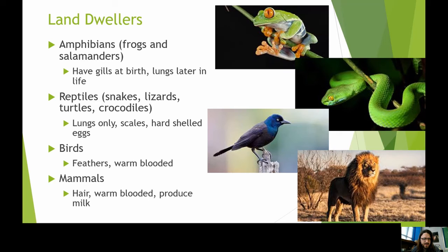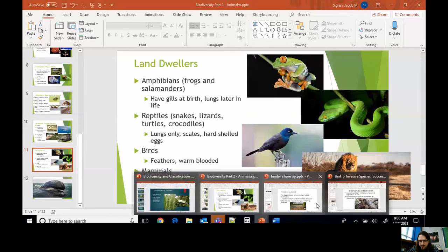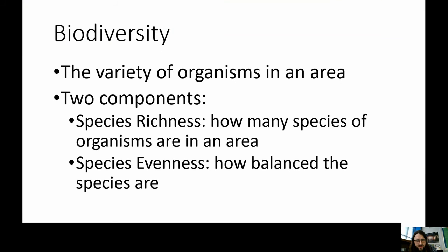That covers the variety of life on Earth. Now let's summarize key concepts on biodiversity — simply the variety of organisms in an area or on Earth. When talking about an ecosystem, we can break this down: species richness is how many different types of organisms are living in a particular area — how many different types of mammals, plants, etc.